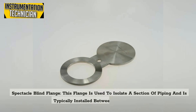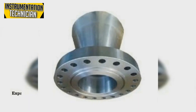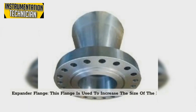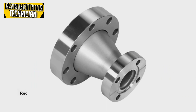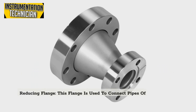Expander flange: This flange is used to increase the size of the piping system by connecting a larger pipe to a smaller one. Reducing flange: This flange is used to connect pipes of different sizes together.